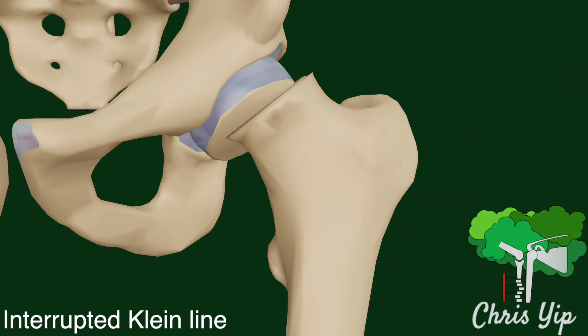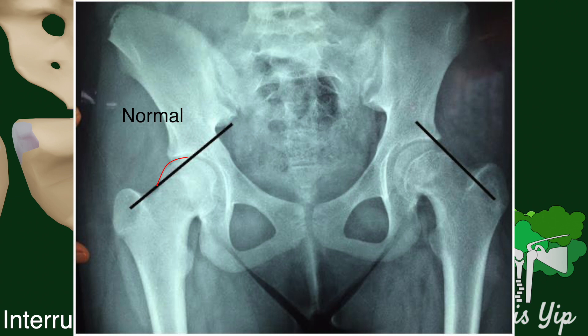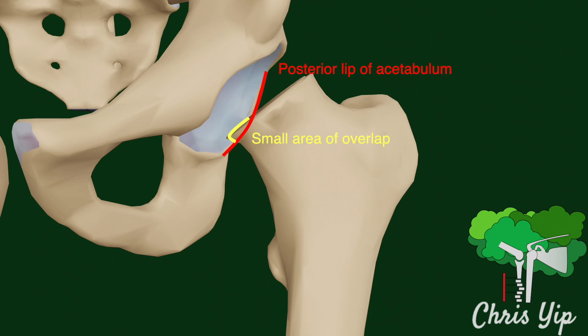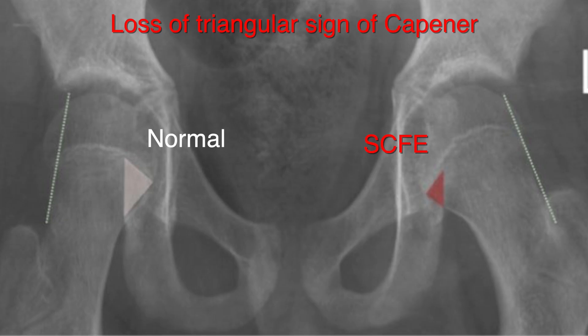The interruption of Klein's line is a useful sign. This is a line drawn along the lateral border of the femoral neck, which in a normal femur will pass through the lateral part of the femoral epiphysis. In SCFE, Klein's line will only touch the edge of the femoral epiphysis. Since the metaphysis is displaced laterally, it may not overlap the posterior lip of the acetabulum as it normally does, which is known as a loss of the triangular sign of Capener.